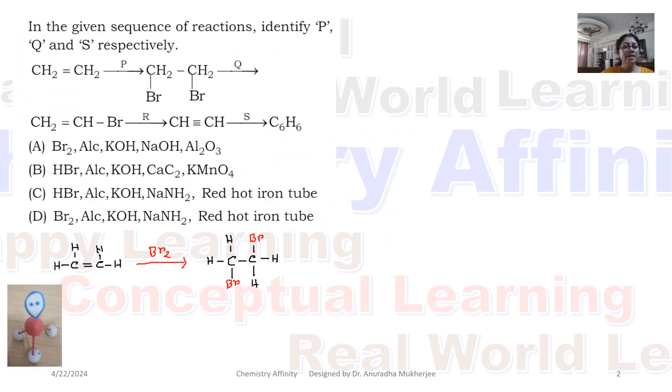In the given sequence of reactions, identify P, Q and S respectively. Here CH2 double bond CH2 is treated with some reagents, we are getting CH2Br, CH2Br.